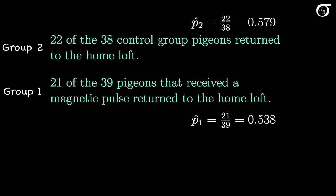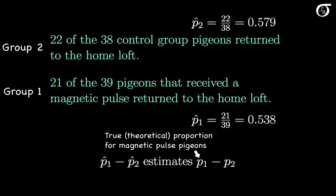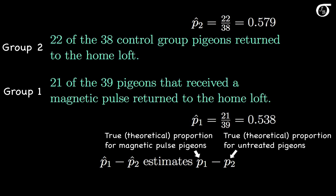P2 hat, the sample proportion of pigeons in the control group that returned home, is 22 over 38, or about 0.579. The difference in sample proportions, p1 hat minus p2 hat, estimates the difference in population proportions, p1 minus p2. p1 is a parameter representing the true theoretical proportion of homing pigeons treated by a magnetic pulse that would return to the home loft under the conditions of this experiment. p2 is a parameter representing the true theoretical proportion of untreated homing pigeons that would return to the home loft under the conditions of this experiment.